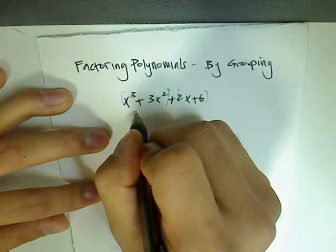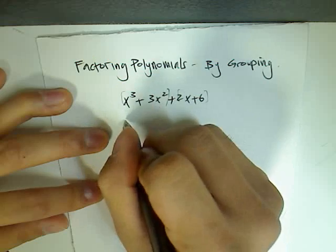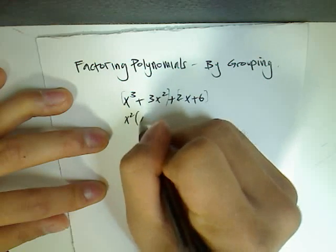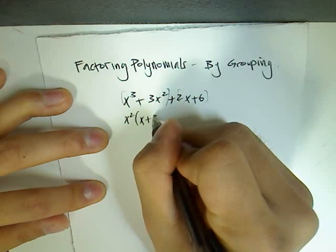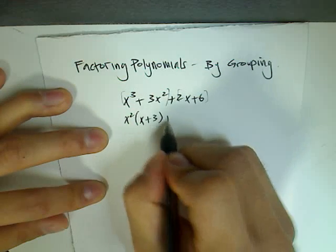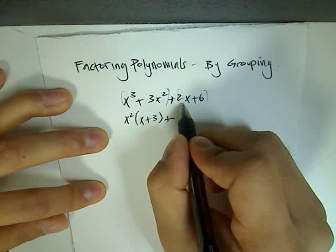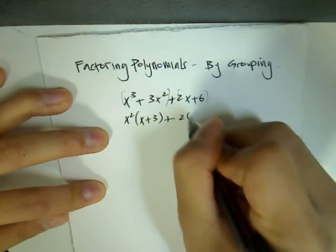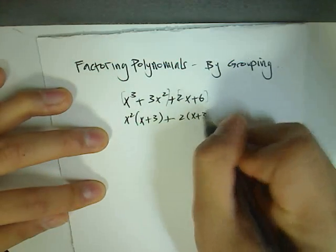So from here, if I factor out an x squared from this term, I'd have an x and plus 3. And then from this term, 2x plus 6, you can factor out a 2, and you're left with x plus 3.